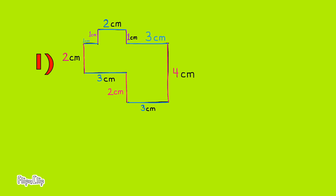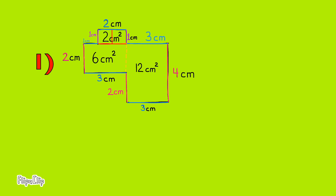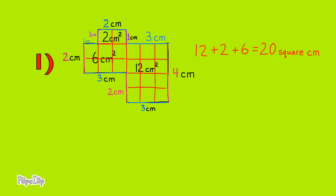Three by four equals twelve square centimeters. One by two equals two square centimeters. And two by three equals six square centimeters. Twelve plus two plus six equals twenty, so the area of the entire polygon is twenty square centimeters.